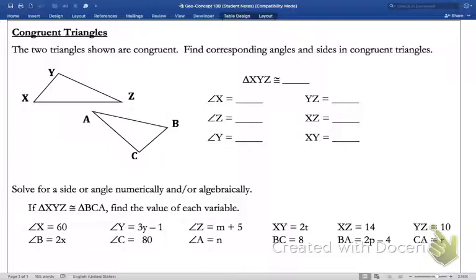Now, congruent triangles are triangles that have the same shape and size, which means they have the same side lengths and the same angle measures. So the two triangles shown are congruent. Find corresponding angles and sides in congruent triangles.